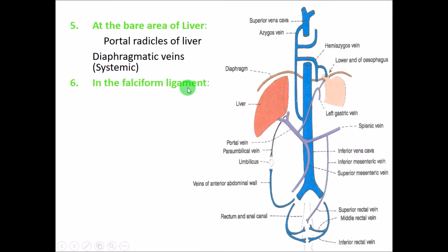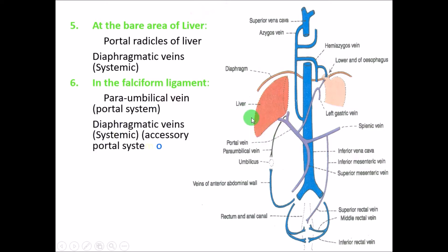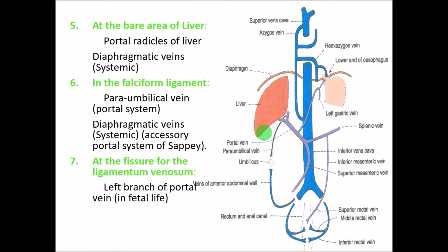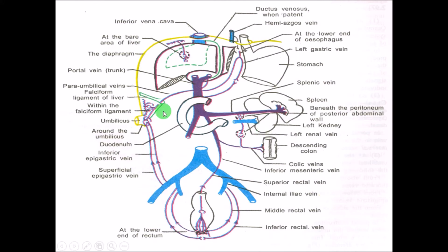The sixth site is at the falciform ligament, where the para-umbilical veins — which are portal — anastomose with the diaphragmatic veins, which are systemic. The seventh site is at the fissure of the ligamentum venosum, where in fetal life the left branch of the portal vein anastomoses with the inferior vena cava through the ductus venosus.